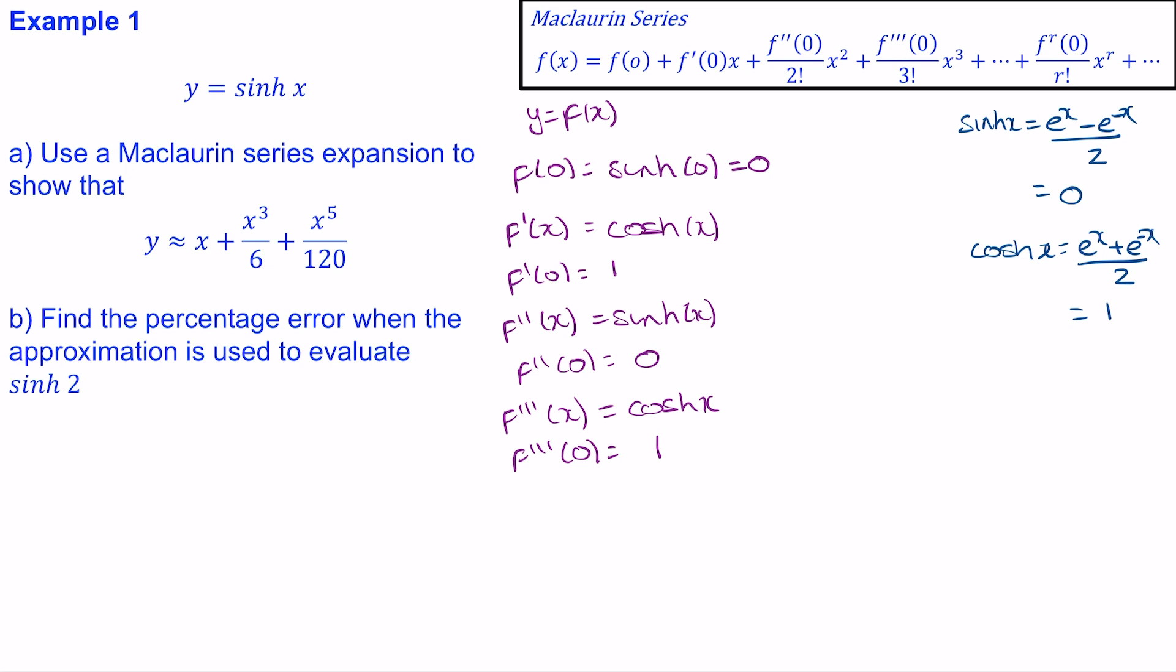So now you can see a pattern: we get 0, 1, 0, 1. So you'd expect the fourth derivative, which is the derivative of cosh(x), to be sinh(x). And this is when x equals 0, 0. So finally the fifth derivative, cosh(x), when x is 0 is 1.